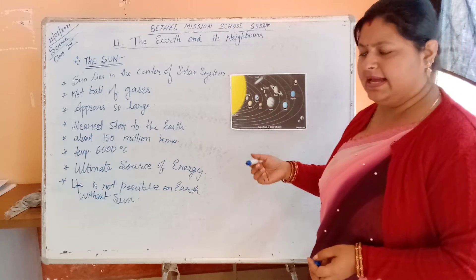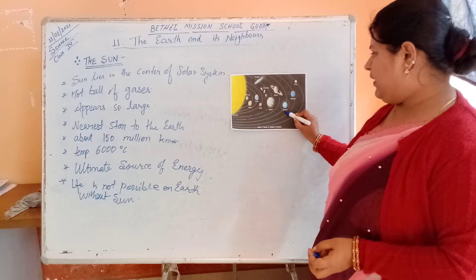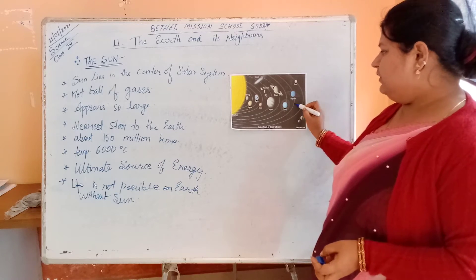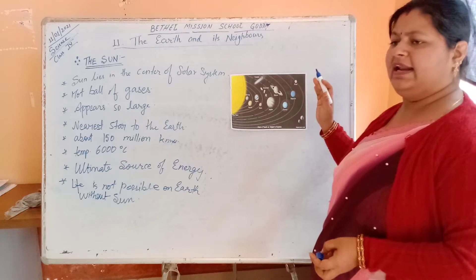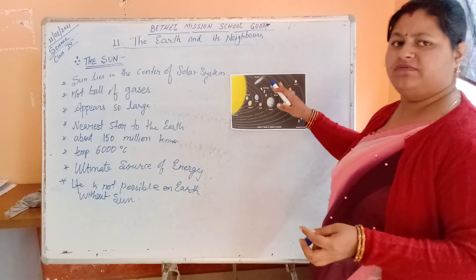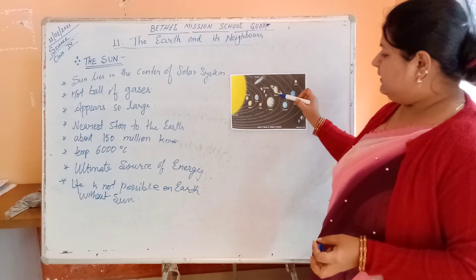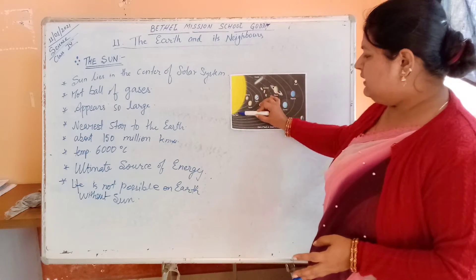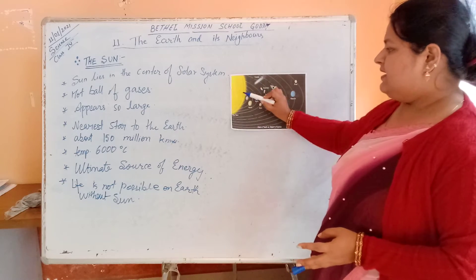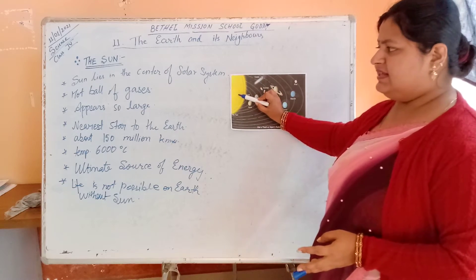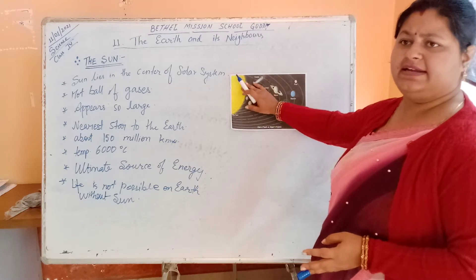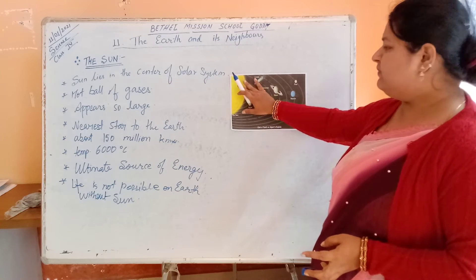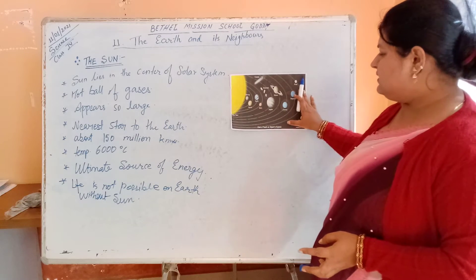They all have their own fixed orbit through which they orbit or revolve around the sun. Next is Uranus, then Neptune. They all have their own features and are just revolving around the sun. Sun lies in the center of the solar system.